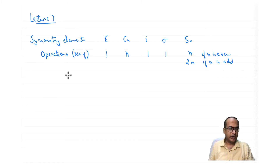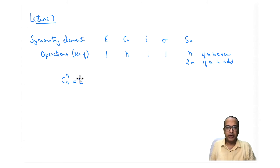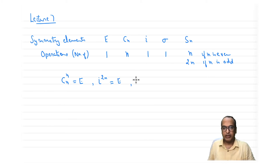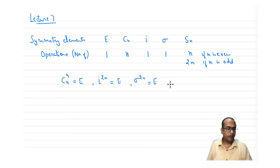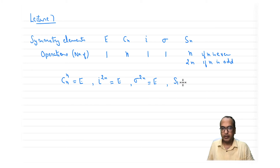There were some special cases: Cn to the power n equals E. i to the power 2n also equals E. Similarly, sigma to the power 2n equals E. Also, S1 is nothing but sigma — we can easily prove this.